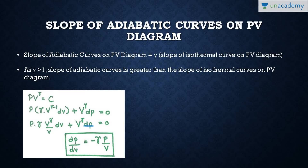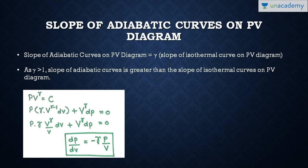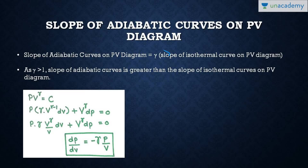Ignoring the minus sign and taking magnitudes: the magnitude for the isothermal curve is P/V, whereas the magnitude for the adiabatic curve is γ·P/V. So whenever you see two curves on a PV diagram, the curve with the steeper slope is the adiabatic curve and the one with the lesser slope is the isothermal curve. The slope of the adiabatic curve equals γ times the slope of the isothermal curve. In GATE and Engineering Service examinations, the ratio of the slope of the adiabatic to the isothermal curve is simply γ.